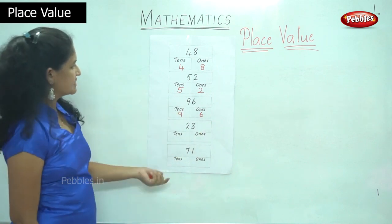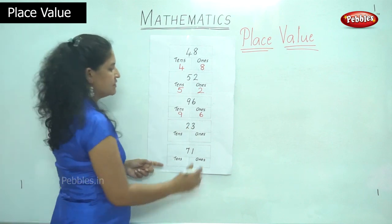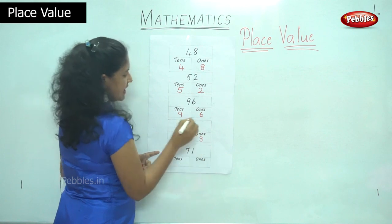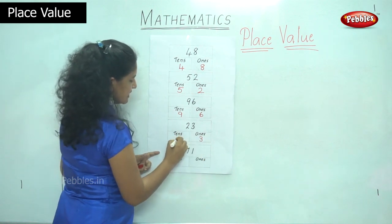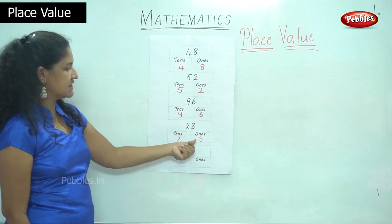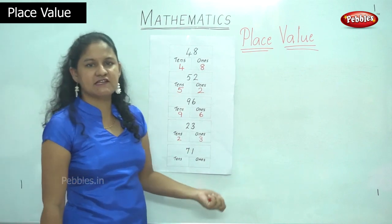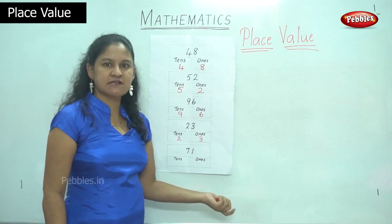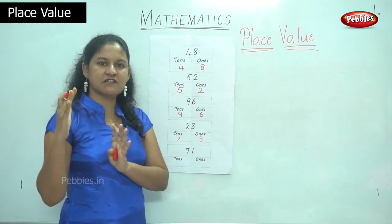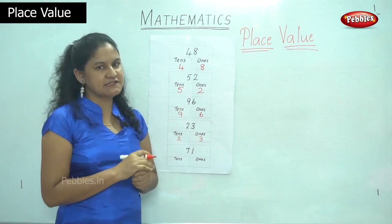The next number is 23. I have number 3 in the 1s place and number 2 in the 10s place. So it is read as 2 10s and 3 1s. Knowing the place value will make addition of 2-digit numbers simpler.